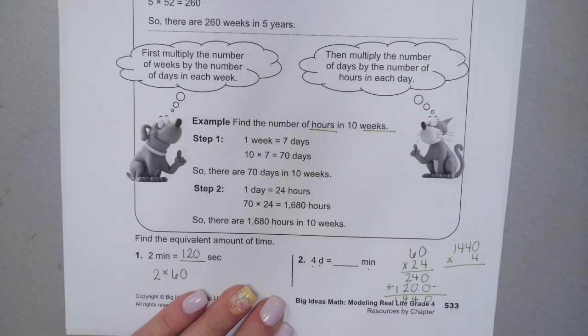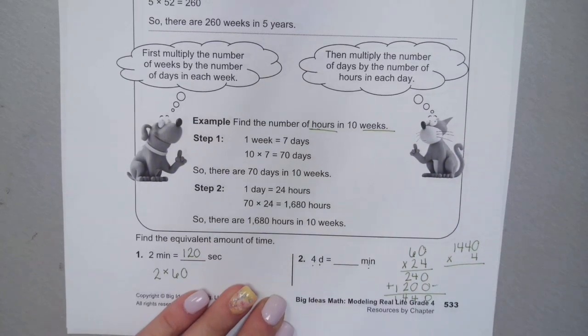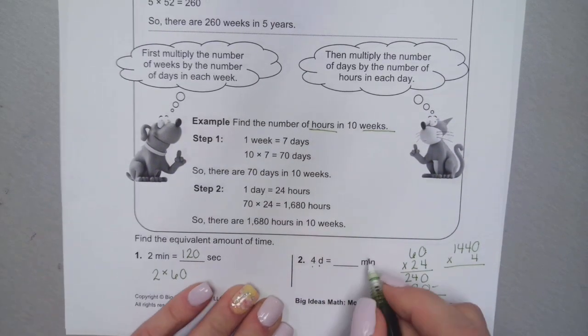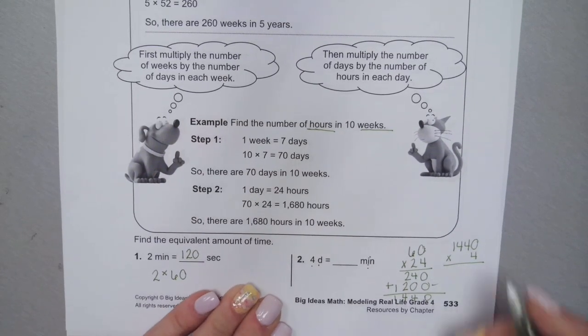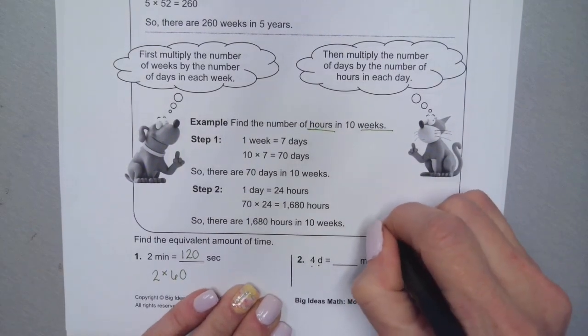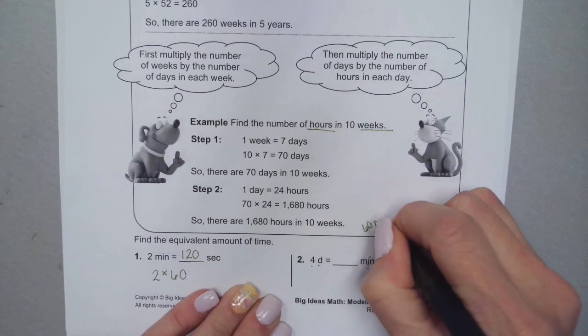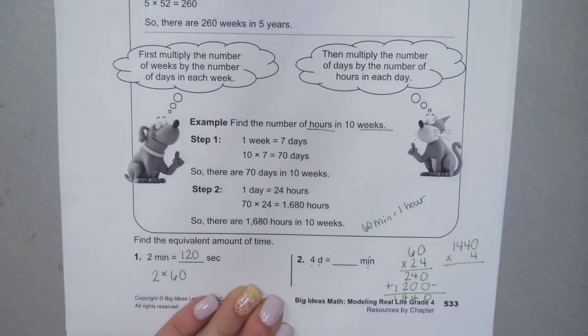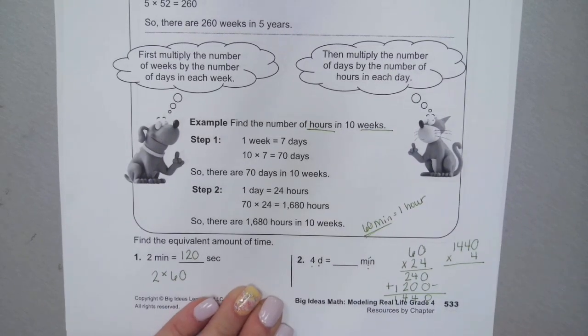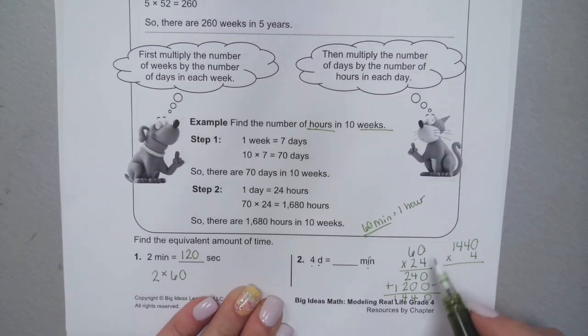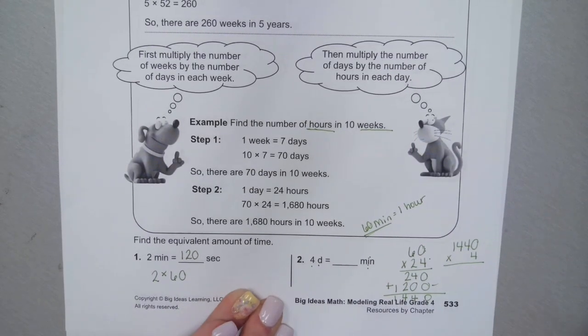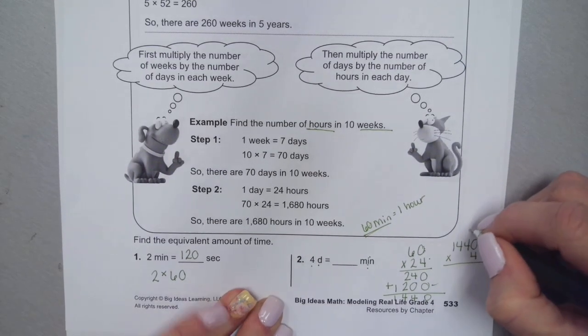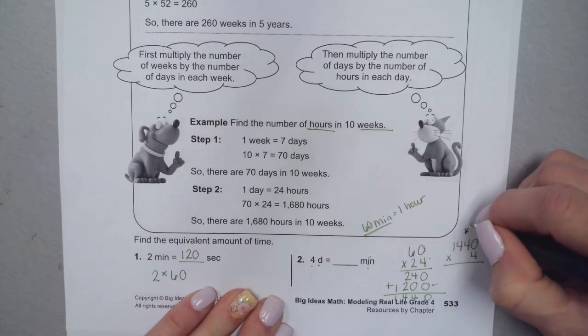She was asking where did I get the 60 from. I'm going from days to minutes, right? I don't know how many minutes there are in one day, but I do know that there are 60 minutes in one hour. So that's where the 60 came from. There are 24 hours in a day, so I needed to find out how many minutes there are in a day. So this is how many minutes there are in a day.